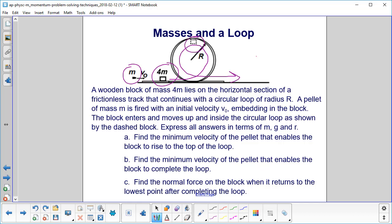So you can see here's where it's going to be when it's at the top. Express all your answers in terms of m, g, and r. Find the minimum velocity of the pellet that enables the block to rise to the top of the loop.